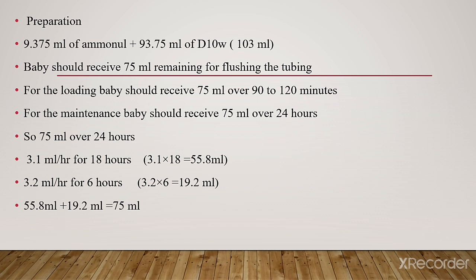For the loading dose, the baby should receive 75 ml over 90–120 minutes. For the maintenance dose, the baby should receive 75 ml over 24 hours: 3.1 ml per hour for 18 hours and 3.2 ml per hour for 6 hours. So 3.1 × 18 hours = 55.8 ml, and 3.2 × 6 hours = 19.2 ml, totaling 75 ml.